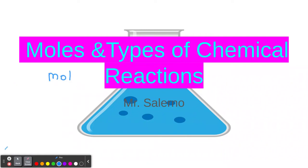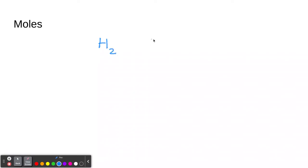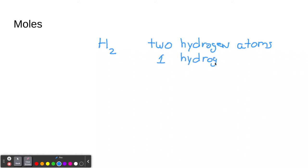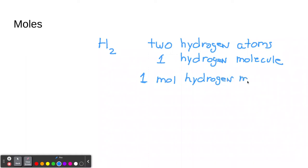We use moles in chemistry. Let's say we had H2 — we know that this is two hydrogen atoms, but it's one hydrogen molecule. That's important to know. When we're writing moles, we're going to say one mole (mol) hydrogen molecule. That's what we're normally talking about — the molecules.